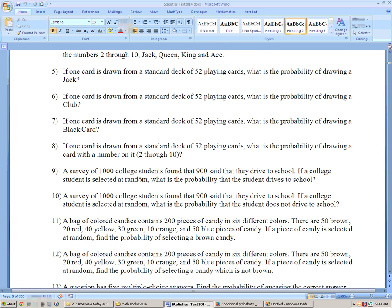On 9, a survey of 1,000 students found that 900 drive to school. If a college student is selected at random, what is the probability that the student drives to school? Well, 900 out of 1,000 or 9 out of 10.